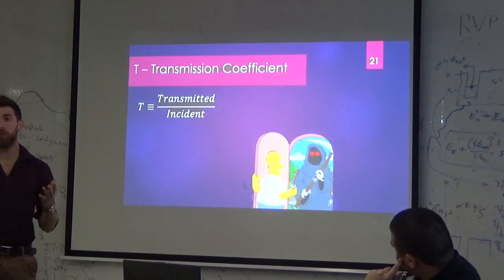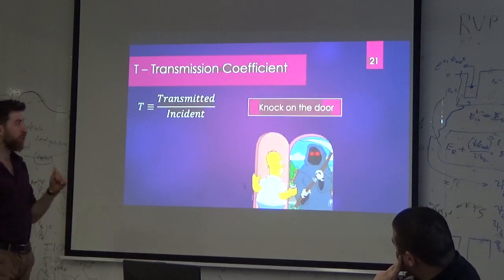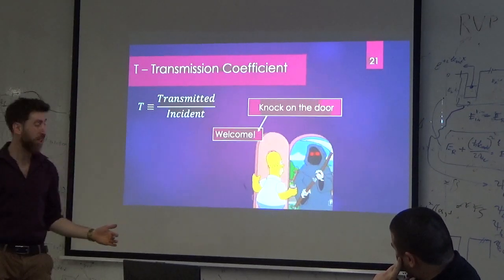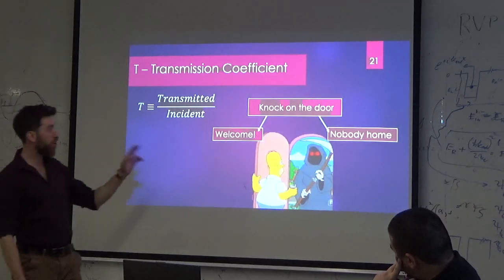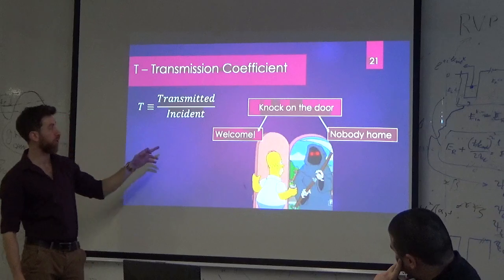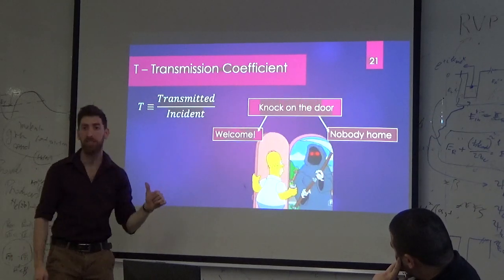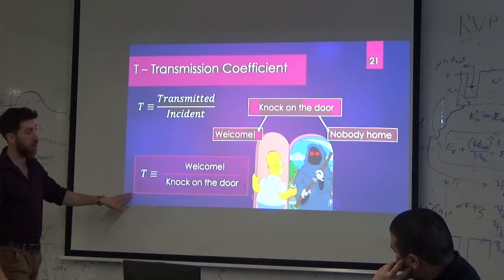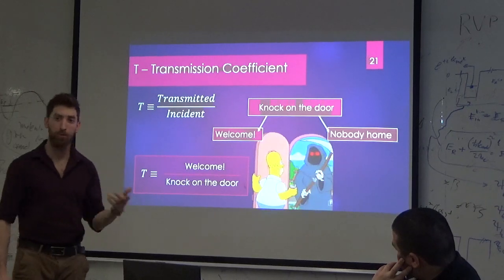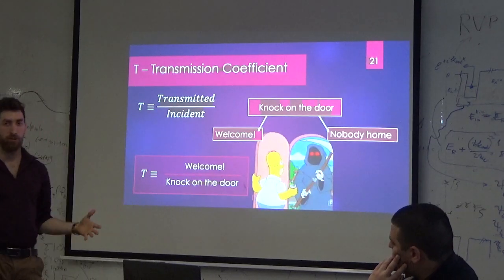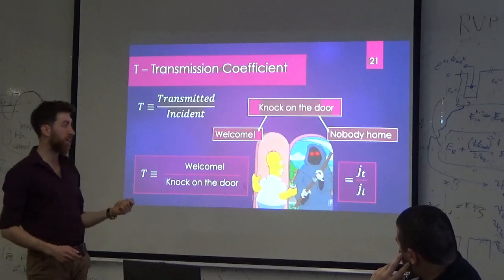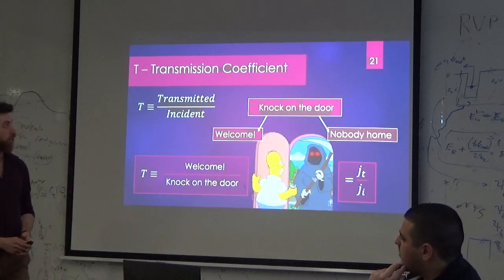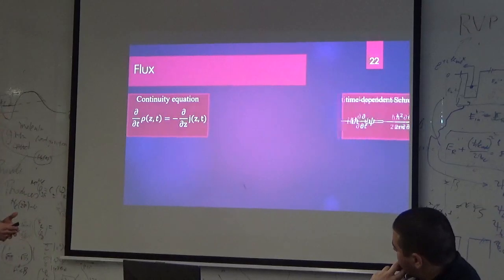Now I want to talk about the transmission coefficient. I found a really easy way to explain it — the transmission coefficient is like a door. If you come to a door and knock, the door is the barrier, and there are two options: welcome, you get into the house — that's transmission — or nobody is home and you turn around — that's reflection. Knocking on the door is the incident, the total beam. So the transmission coefficient is the ratio of transmitted flux to incident flux. We're not talking about a single electron but a large amount — currents — so we need to account for fluxes of electrons transmitted and incident.